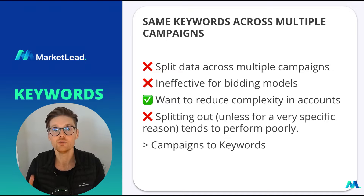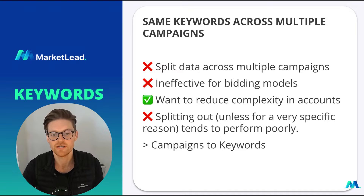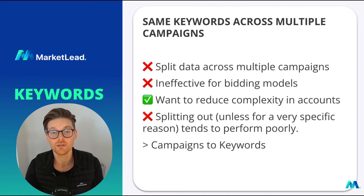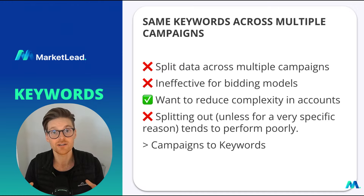For most accounts, you really do want to be reducing the complexity in the account — firstly from a management perspective, but also the complexity of the data and how the data is used. Splitting things out, unless for a very specific reason, tends to perform poorly. That goes from campaigns down to keywords. When you do segment them out, they tend to have worse performance because the data is split out too much, and you don't tend to manage it well, which means it just doesn't get better results.